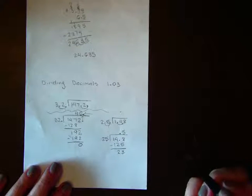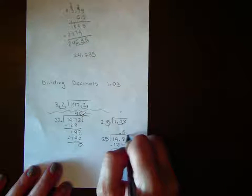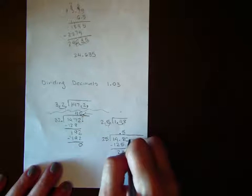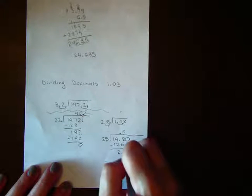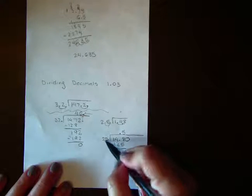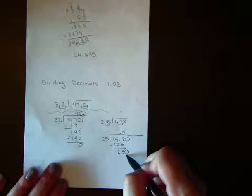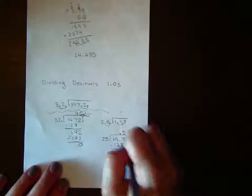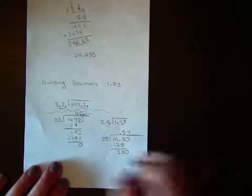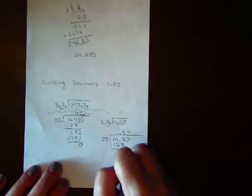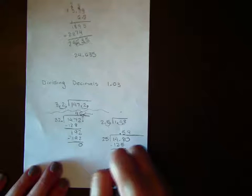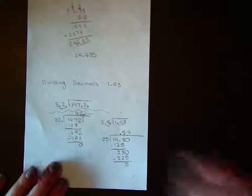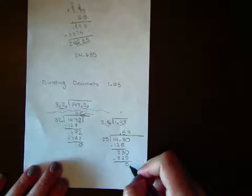25 cannot go into 23. But because we're using decimals, we can add a 0 here. Bring the 0 down. So now we're going to do 25 into 230, which would be 9. 9 times 25 is 225.